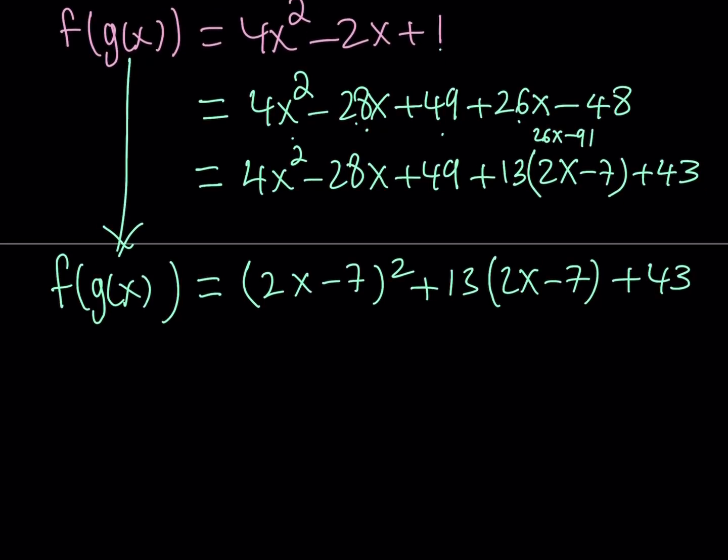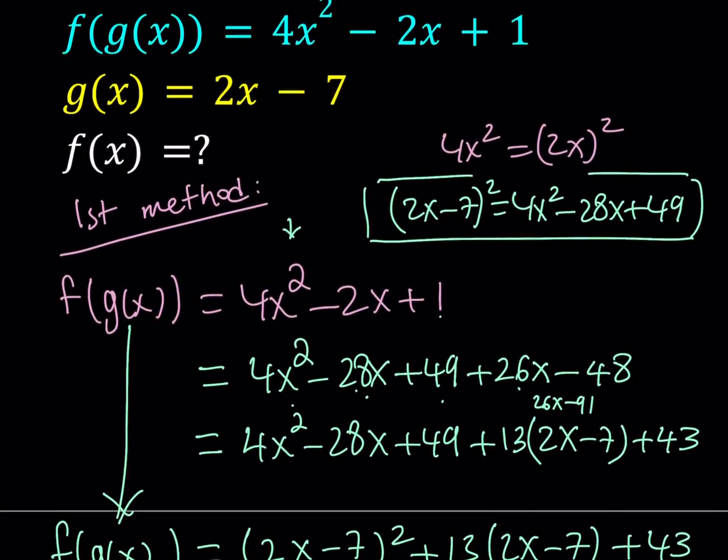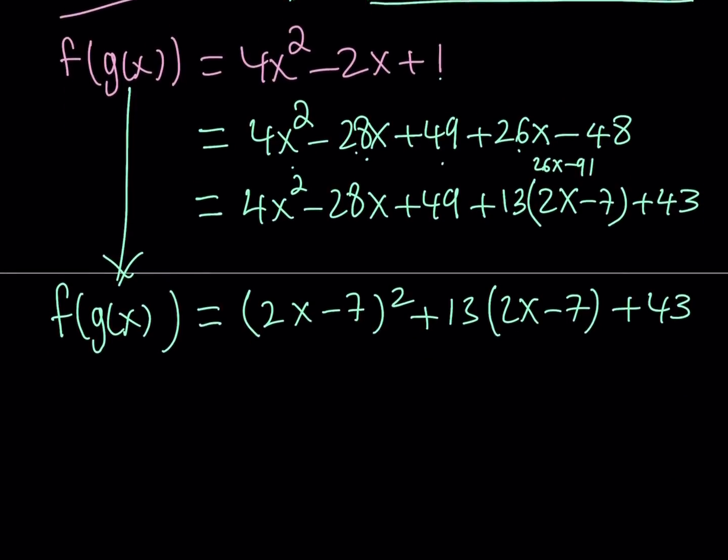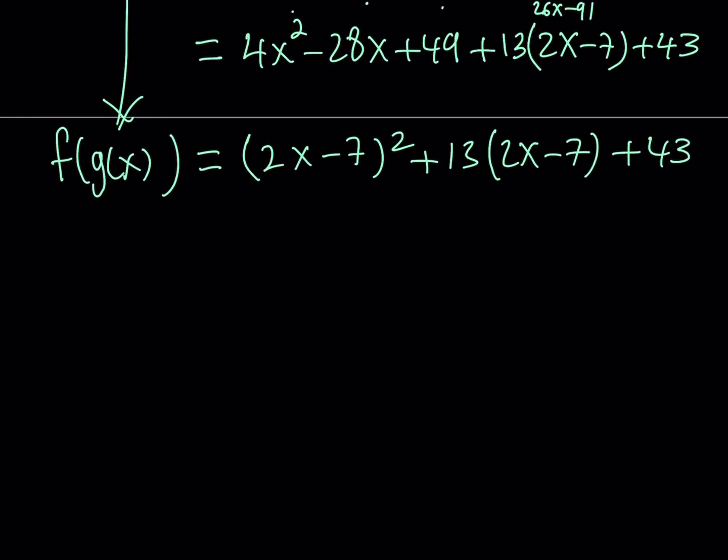So, this is f of g of x. But our goal is to find f of x. But why did we use 2x minus 7? Because if you look at 2x minus 7, 2x minus 7 is g of x. So, I can easily, a lot of times we replace g of x with what it is. But this time we're going to reverse the process. Why? Because we're working backwards. That's why this method is painful. I know it is painful. But hopefully, it's going to be informative. For at least some people.